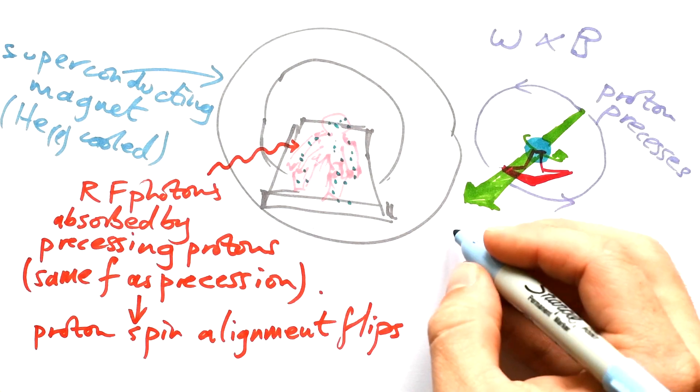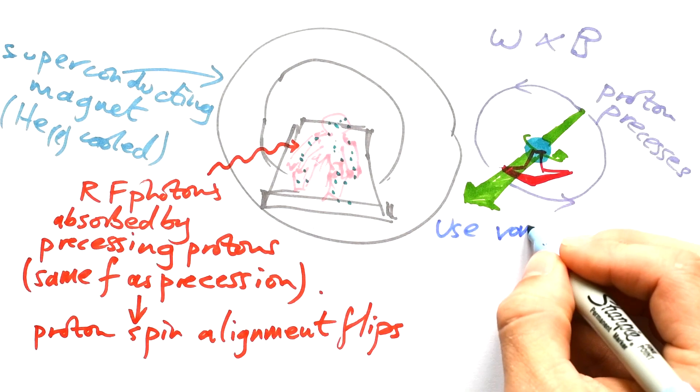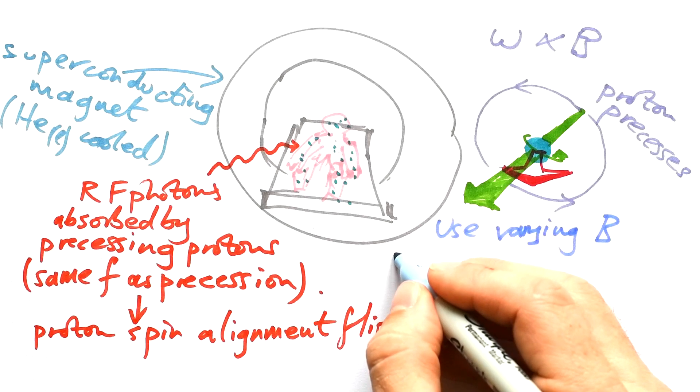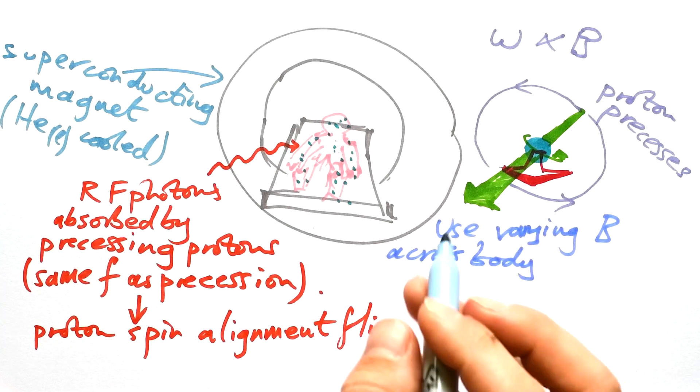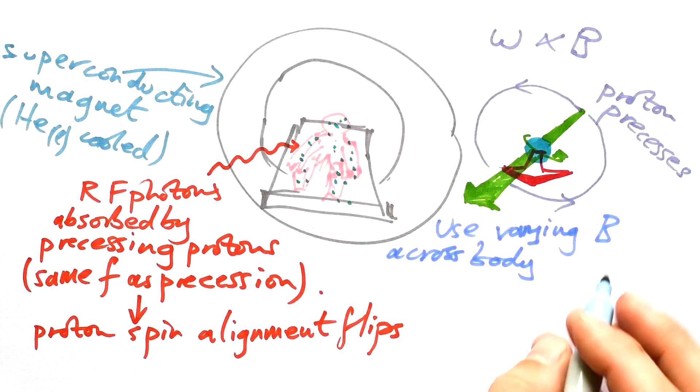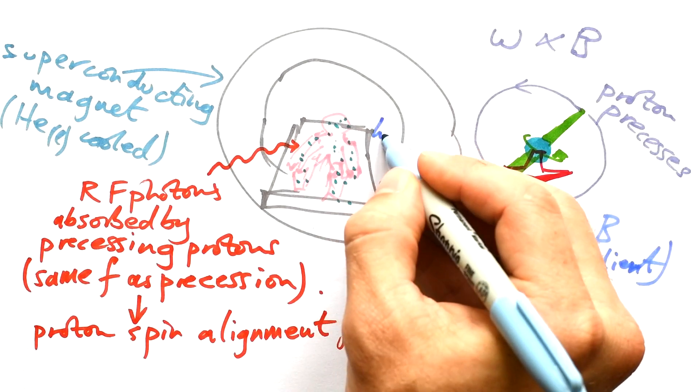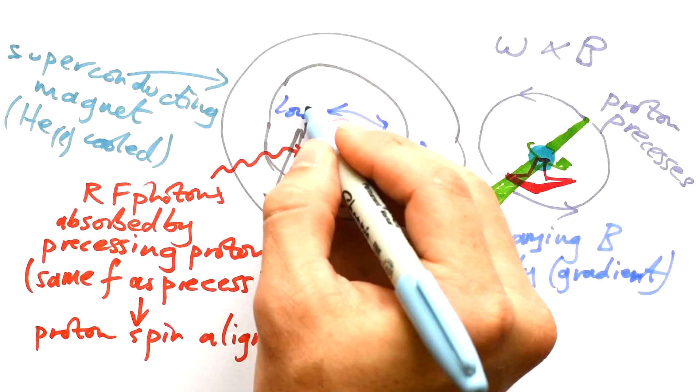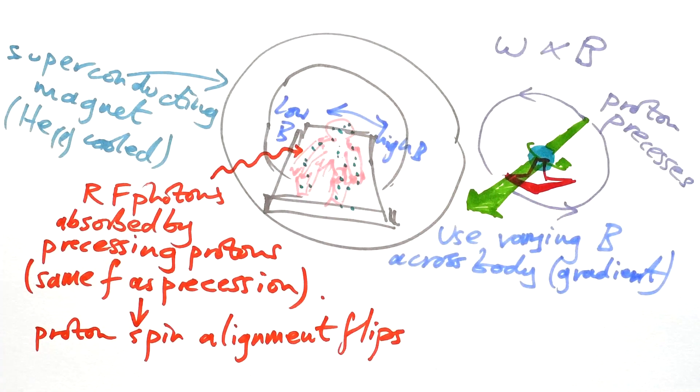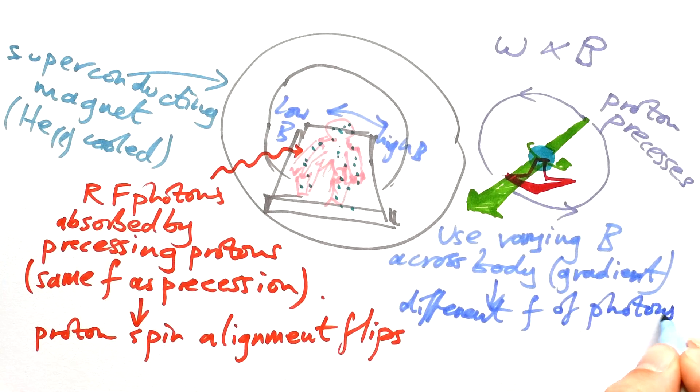To make it even better, what we can do is use a varying magnetic flux density across the body. And we do that by using other electromagnets that are around it, or we can call that a gradient of the field. So we might have a high B over here that goes to a low magnetic flux density over here. So that means that different frequencies of photons are absorbed.